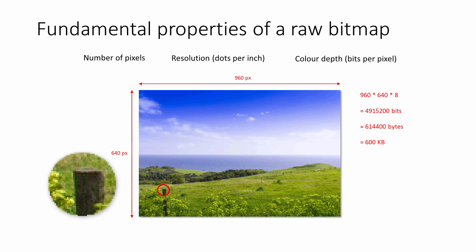The simplest type of bitmap is saved to secondary storage as a two-dimensional array of pixel data. Each and every pixel is given a number to encode its colour. When the colour of each and every pixel in an image is encoded separately, it's known as a true colour image.